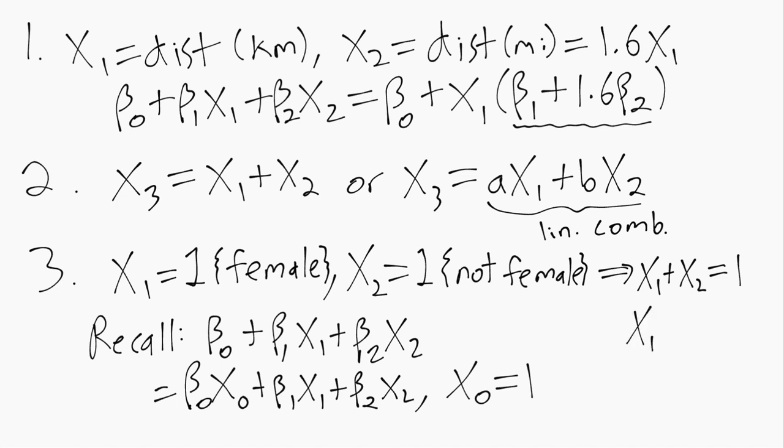So in other words, x1 plus x2 equals x naught from our model. This is of course assuming we do have an intercept term in our model. If we didn't have the intercept term, then there would be no x naught and we could include x1 and x2.